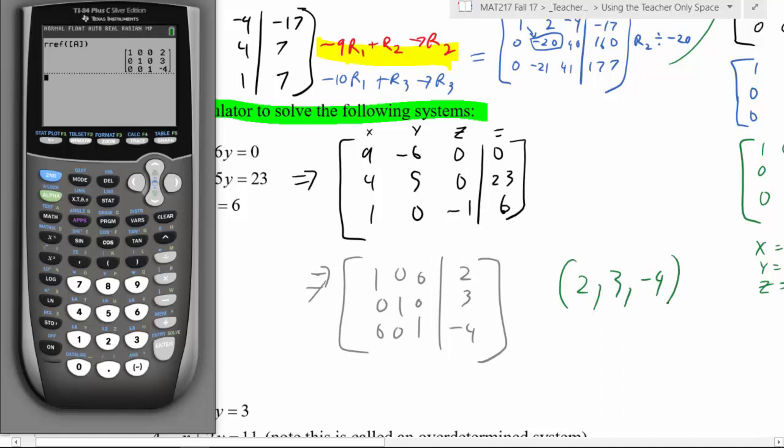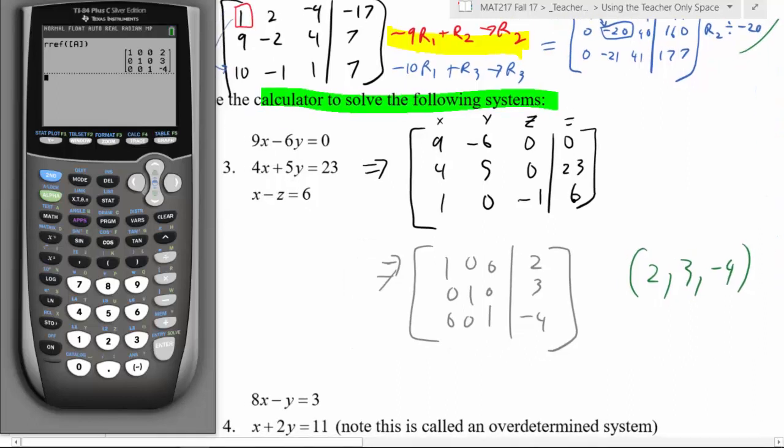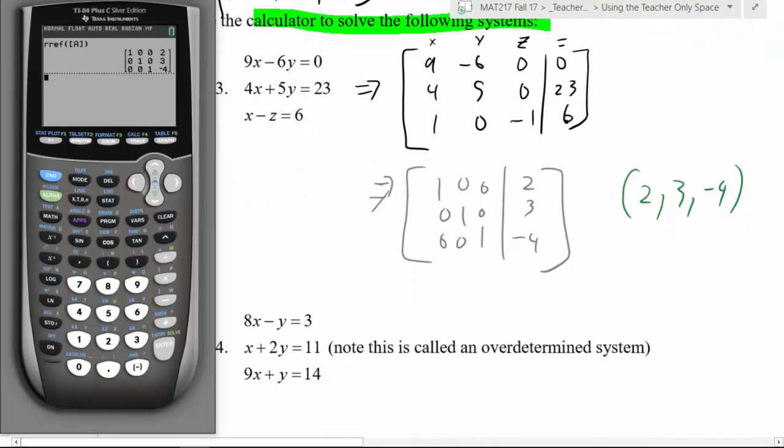You can see the calculator is significantly faster, and imagine if these numbers were messy fractions, you're going to make a mistake doing this by hand. But you have to understand the process, because later we're going to hit some problems where you're going to have to really think outside the box. The calculator is doing it the exact same way you did. It took that top left number, got zeros below it, moved in the diagonal, got zeros above and below, so on and so forth.